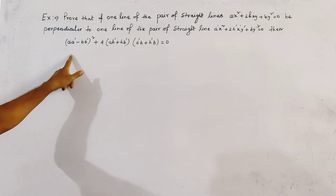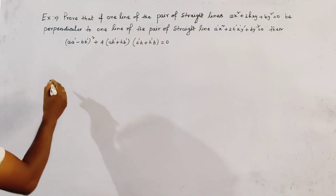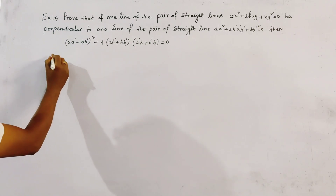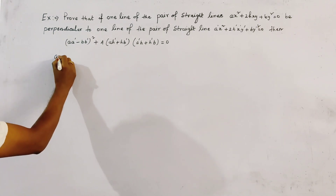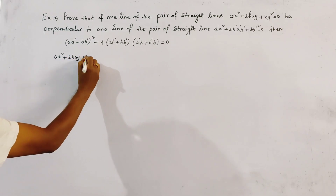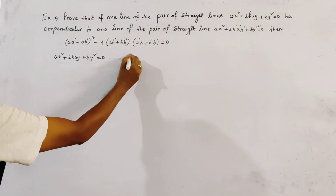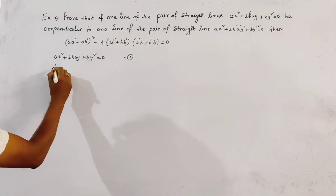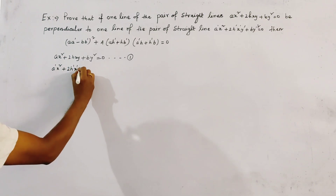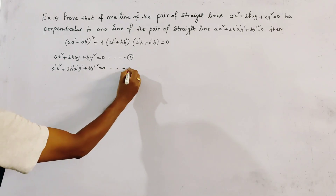First, write the two pairs of straight lines. The first pair is ax² + 2hxy + by² = 0, and the second pair is a'x² + 2h'xy + b'y² = 0.